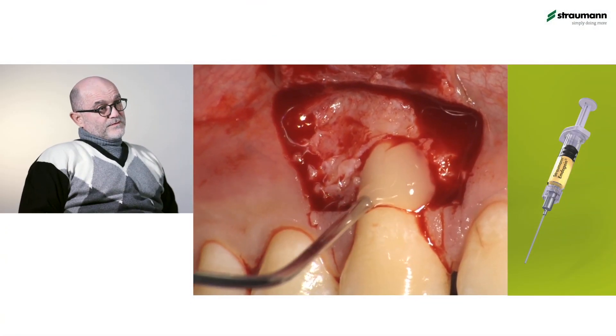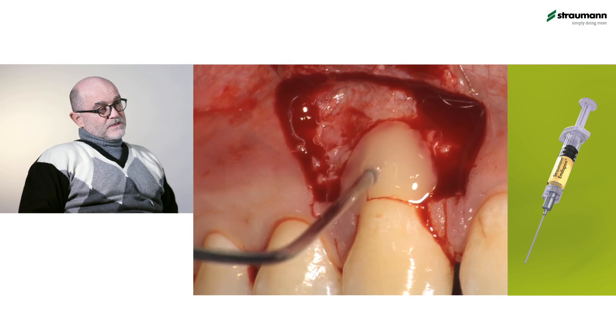The reason why we also added Emdogain was to improve the quality of the attachment between the newly formed connective tissue and the root surface. By depositing amelogenins on the root, it promotes the cells of the blood clot to be transformed into cementoblasts and fibroblasts, improving the quality of new connective tissue attachment with respect to long junctional epithelium. Another reason was to improve soft tissue healing.